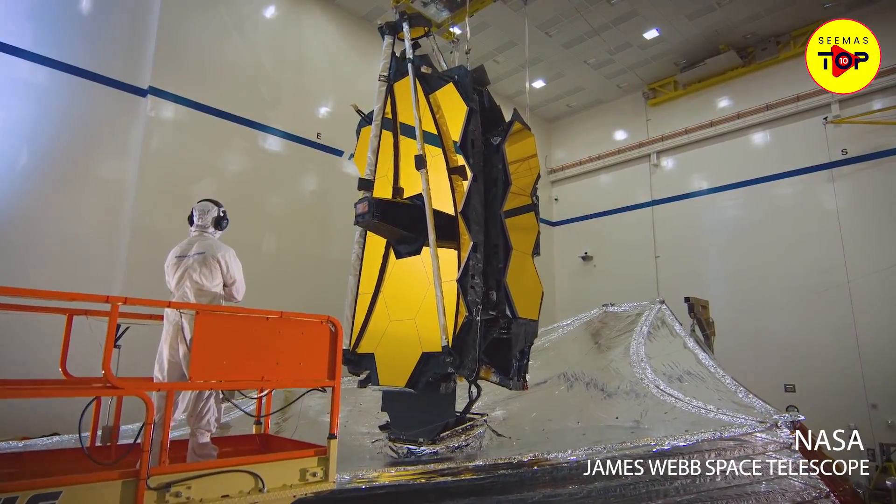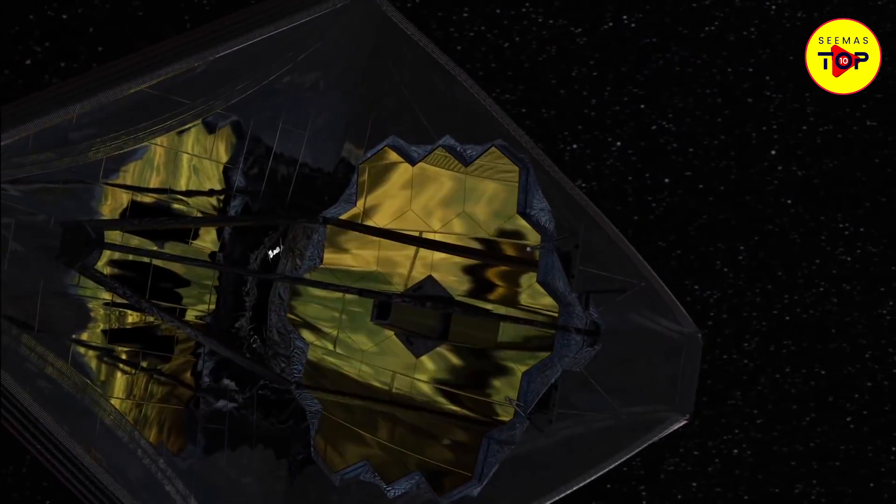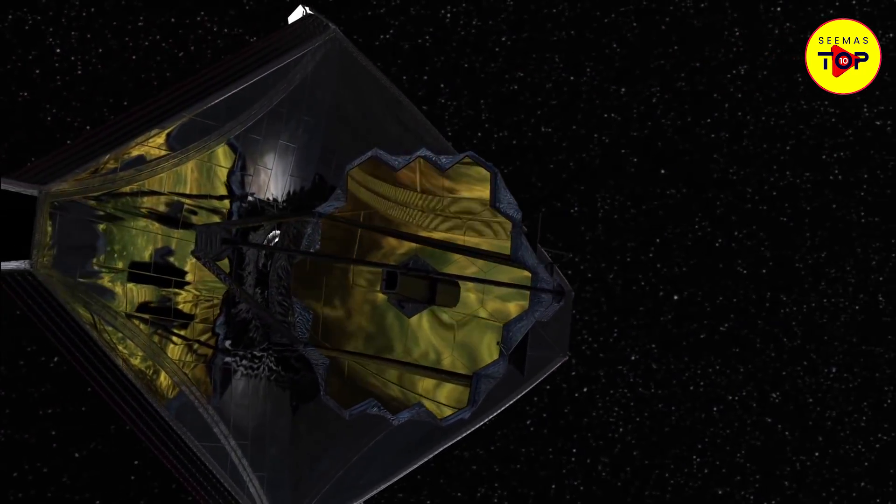For a telescope over two decades in the making, the James Webb Telescope is finally in its trajectory. It will reach the L2 in 29 days.